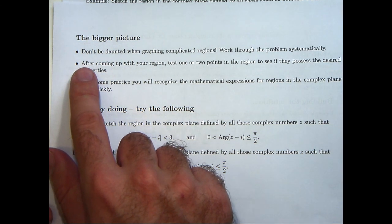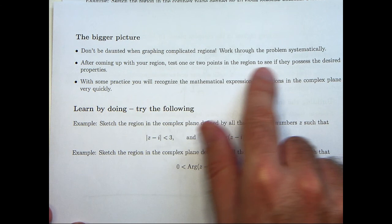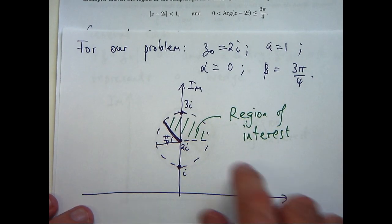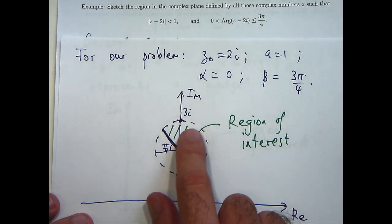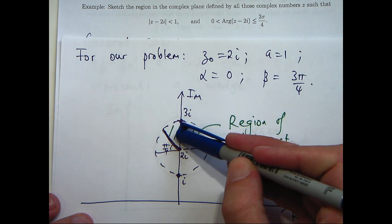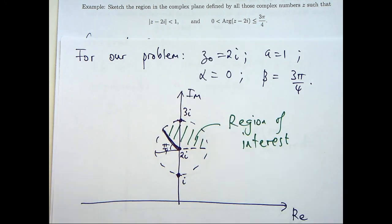Now a good idea, if you have time, is after you come up with your region, test one or two points in the region to see if they possess the desired property. So for example, I could choose the point, say, 2.5i, which just lies there, and then test these inequalities to see if they hold, just as a backup.